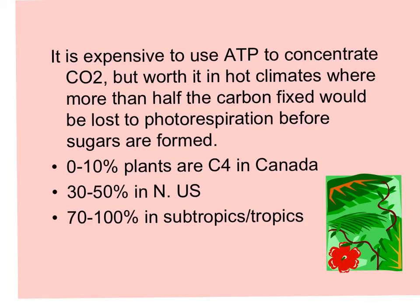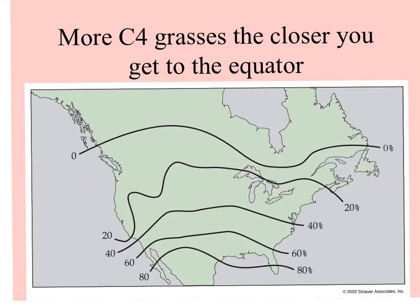Consequently, a very small proportion of plants in northern regions like Canada are C4. In the northern United States, 30 to 50 percent of plants are C4. It's more common in grasses and plants of open, sunny areas. In the subtropics like South Florida and tropics like Central and Northern South America, 70 to 100 percent of plants use C4 photosynthesis. Here's a diagram showing isoclines of the percentage of C4 in grasses, increasing closer to the equator.